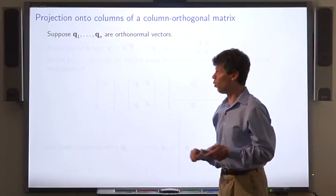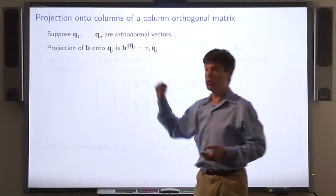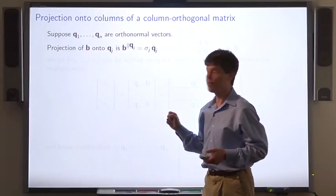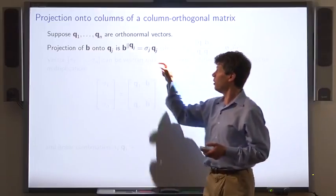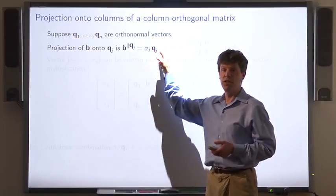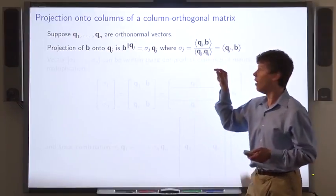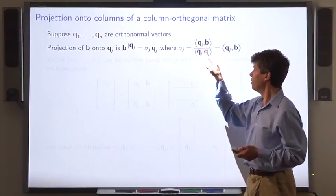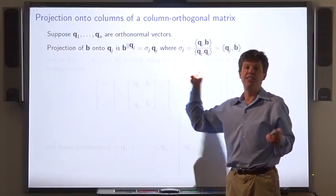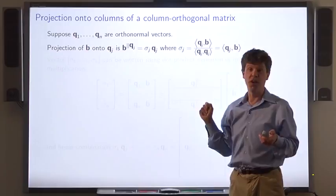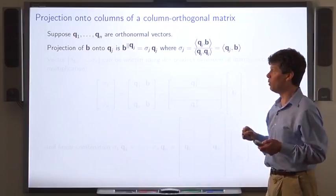Suppose q1 through qn are orthonormal vectors. The projection of a vector b onto one of these vectors, say qj, b parallel, is a scalar multiple sigma j times qj. And the scalar sigma j is the ratio of the inner product of qj with b by the inner product of qj with itself. The inner product of qj with itself is one, because these vectors all have norm one. So it's just the inner product of qj with b.